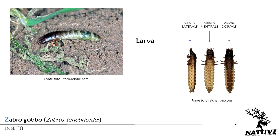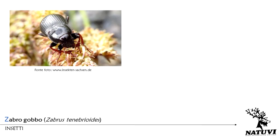Quelli del torace sono di colore bruno, mentre quelli dell'addome presentano un'area rossastra. La specie è diffusa in gran parte dell'Europa; in Italia è presente in tutte le regioni, in particolar modo quelle centro-settentrionali.